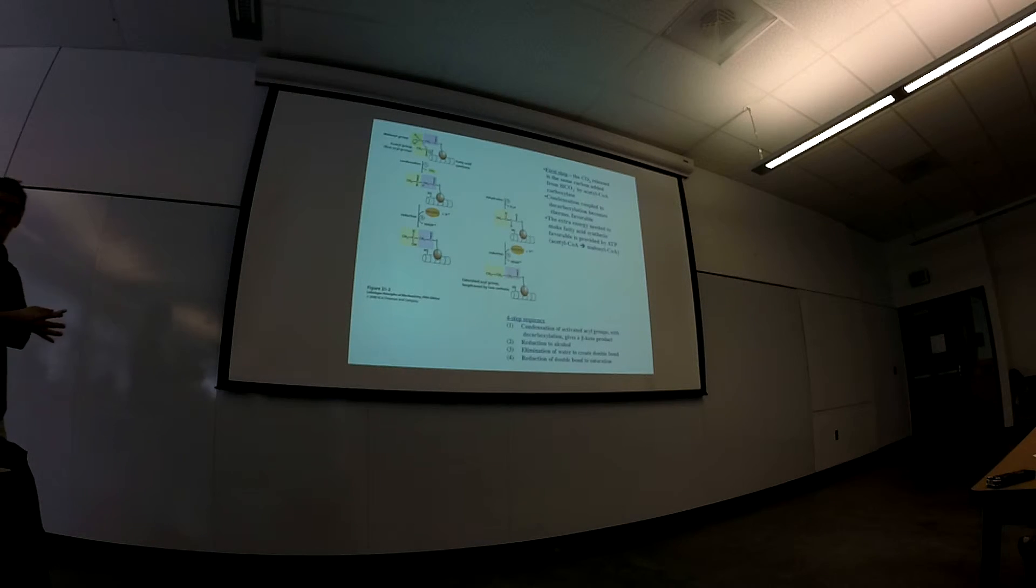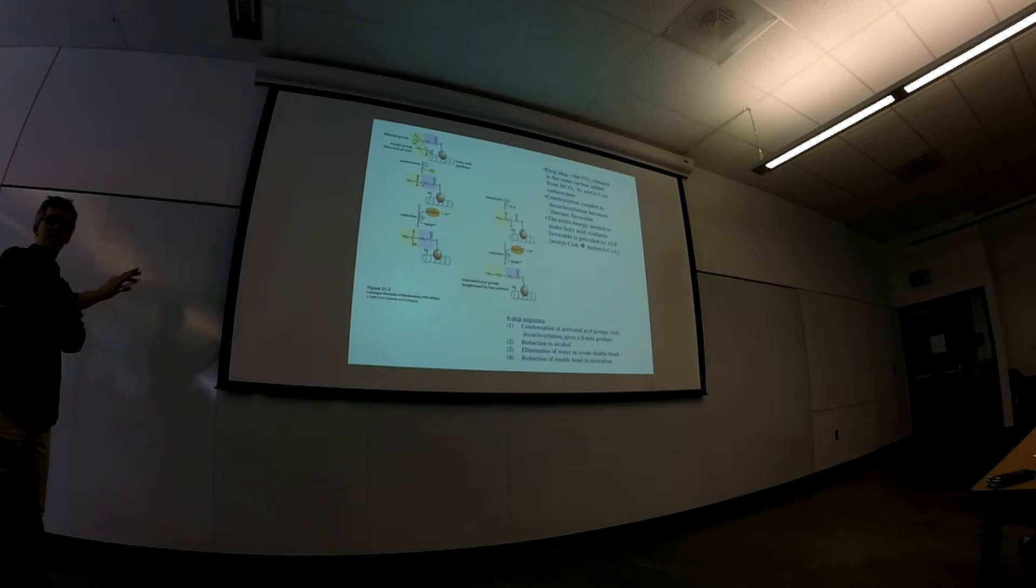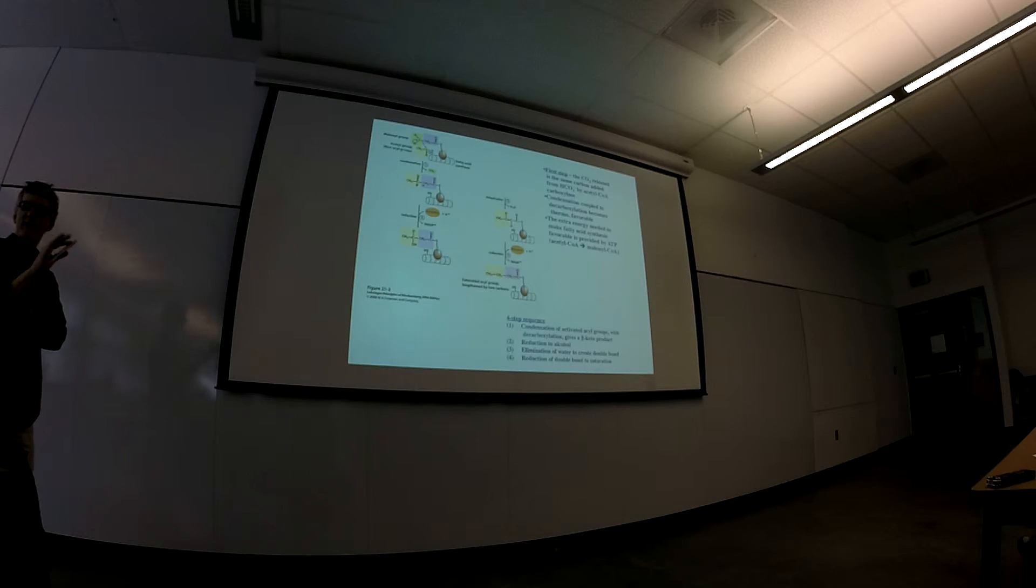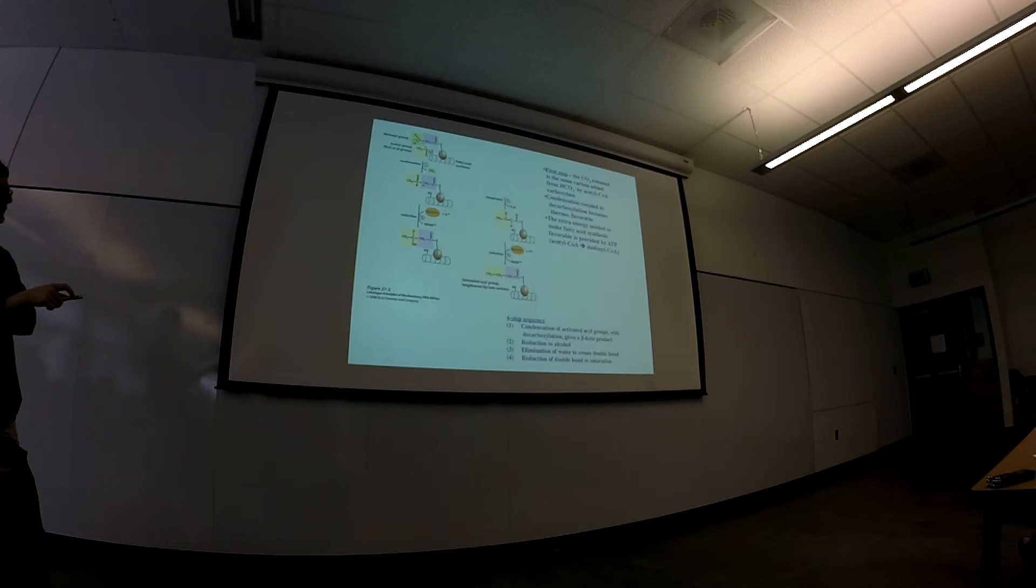So if you look at the two-step, the carboxylase enzyme and then this one, the ATP is getting used in the first one to enable the capacity for decarboxylation in the second one.